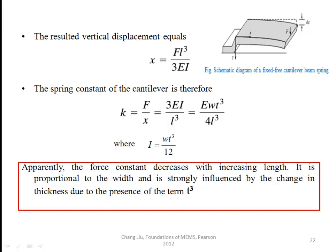Then the spring constant of a cantilever, k equals force divided by displacement. So F/x equals 3EI/l³. Now consider a cantilever beam with rectangular cross section, so we substitute the moment of inertia value into this equation.